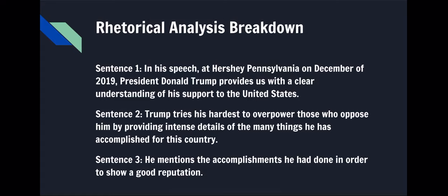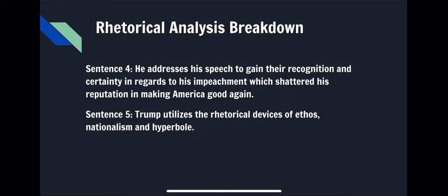Sentence two: Trump tries his hardest to overpower those who oppose him by providing intense detail of the many things he has accomplished for this country. Sentence two explains what Donald Trump does to those who go against him. Sentence three: He mentions the accomplishments he had done in order to show a good reputation. Sentence three explains why Donald Trump is giving his speech to the people of the United States.